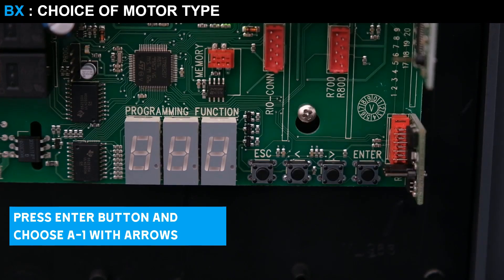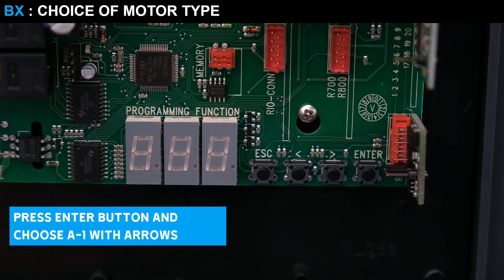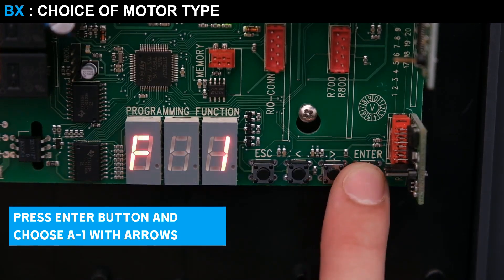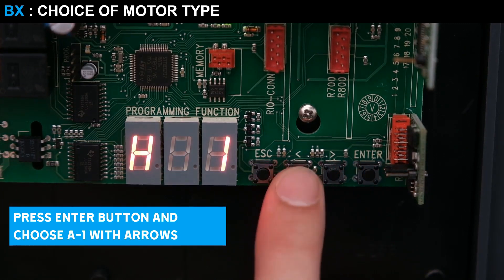To set up your automation, let's start by selecting the type of motor you have. Press Enter to access the menu, and use the arrows to select function A1.